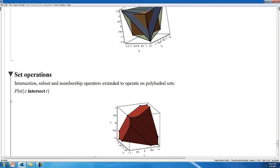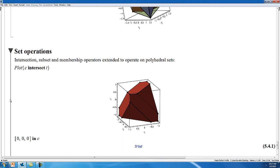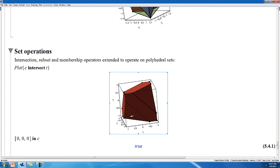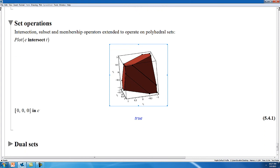In addition, the standard set operators have been extended to work with polyhedral sets. So for example, we can take the intersection of the cube with the tetrahedron, and we get a cube that has four of its corners cut off. You can do things like test for membership whether a point is in the set. So in this case, the origin would be inside the cube.